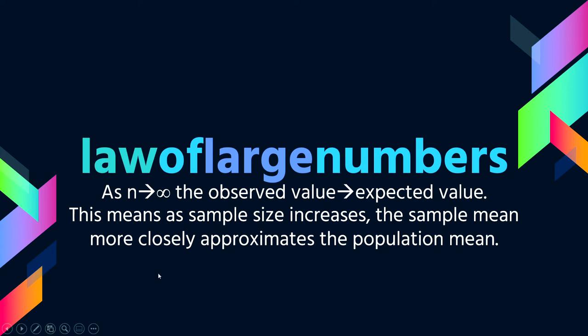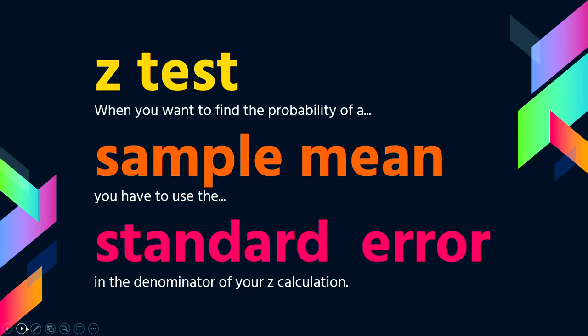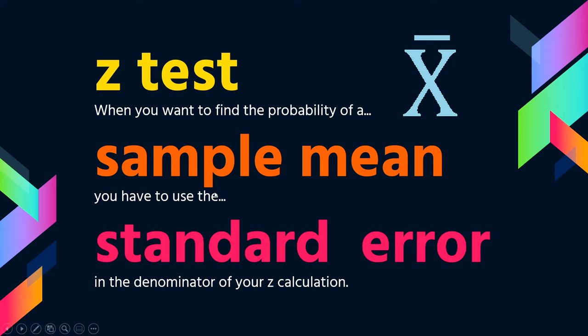Getting a sufficiently large sample — based on the central limit theorem of the sampling distribution of the mean — allows us to use it as an approximation to do tests against expected population values. That is exactly what the Z test does, which is our first test. Here we're trying to test sample means, and a Z test is just like a Z score, except one thing changes: you have to use the standard error.